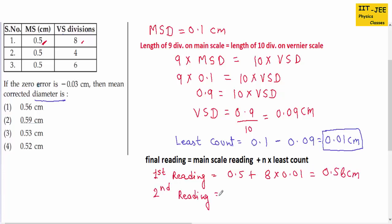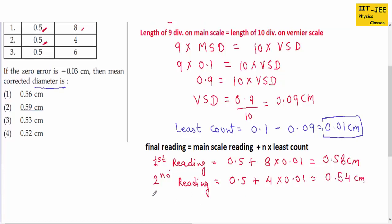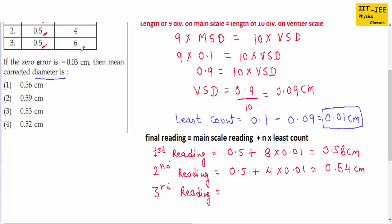For the second reading, the main scale reading is 0.5 cm and the coinciding vernier scale division is 4, so: 0.5 plus 4 times 0.01 equals 0.54 cm. For the third reading, the main scale reading is 0.5 cm and the vernier scale division is 6, so: 0.5 plus 6 times 0.01 equals 0.56 cm.